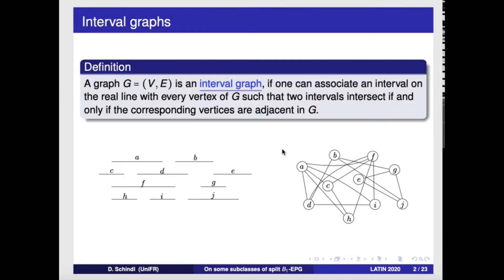Let me first introduce the basic concepts. I'll start with interval graphs. An interval graph is defined by a set of intervals; each vertex is an interval, and two vertices are adjacent if and only if the corresponding intervals intersect. So A and F here, since the intervals intersect, A and F are adjacent. We know pretty much everything about interval graphs.